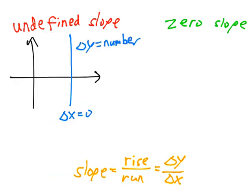How about a zero slope? A zero slope means we have a rise of zero over a number, delta x.